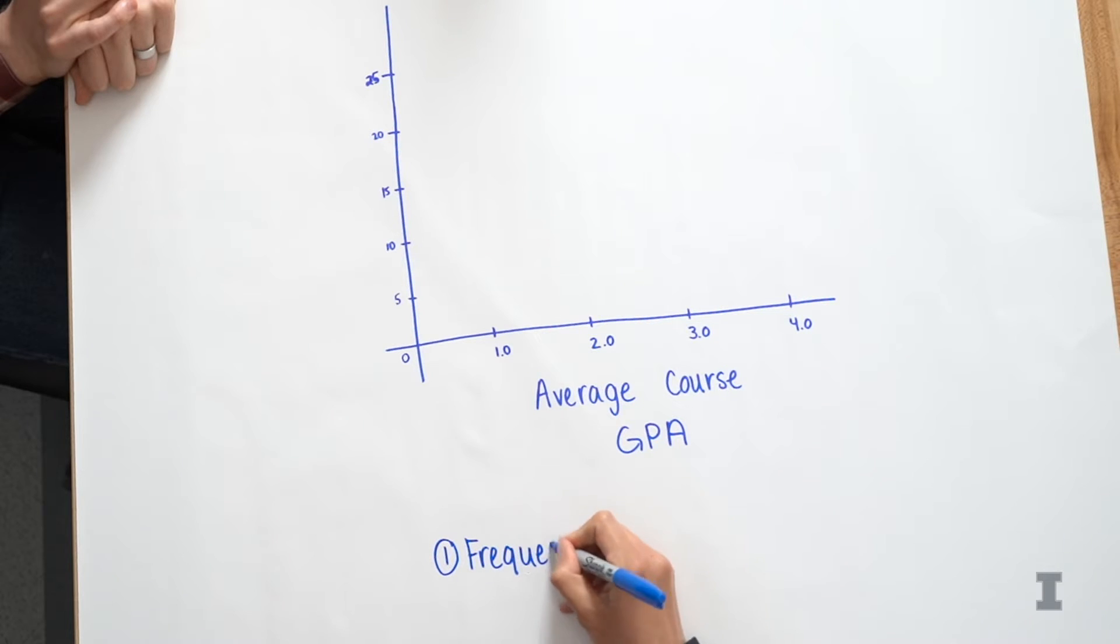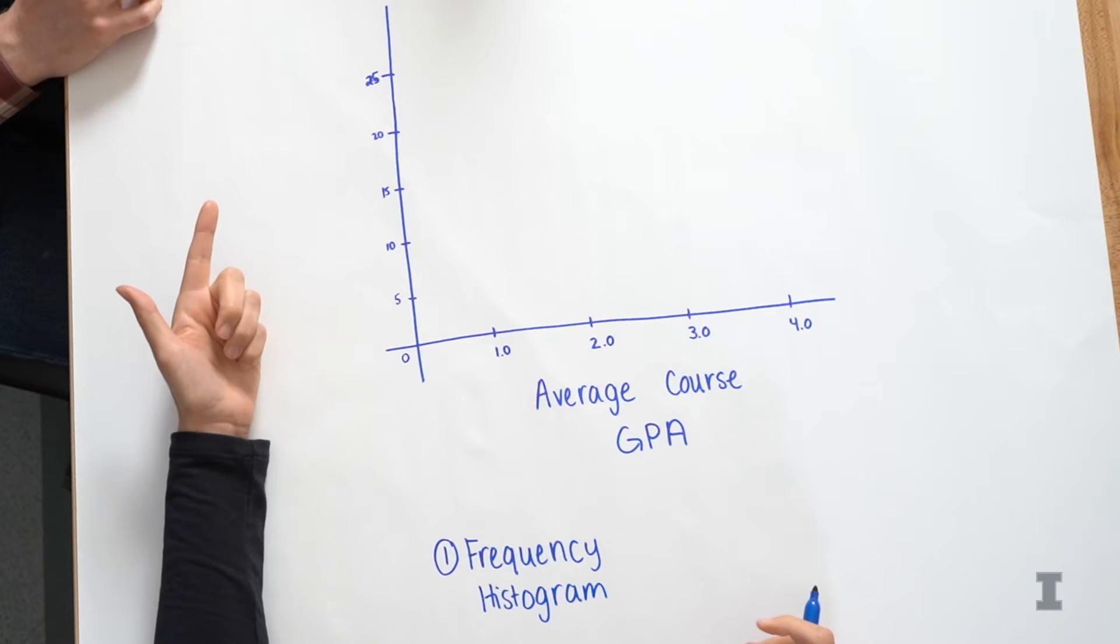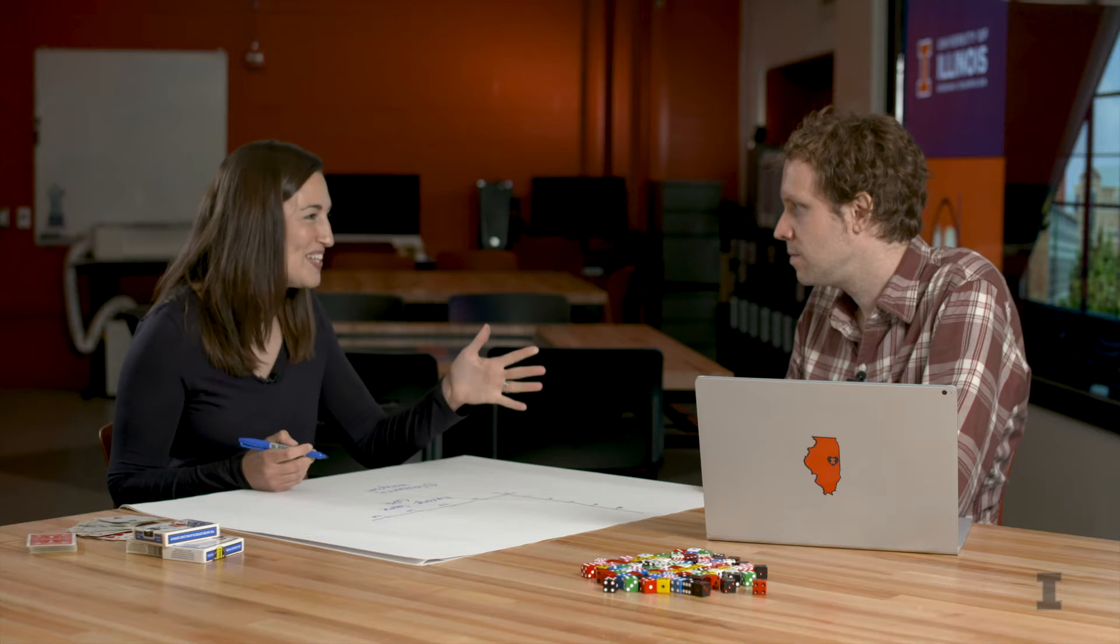And a frequency histogram is really nice for interpreting and reading. So the frequency histogram basically has the x-axis as your variable of interest, average course GPA. And then the y-axis tells you the number of people in each bin. And Wade, can you explain a little bit what bin means?